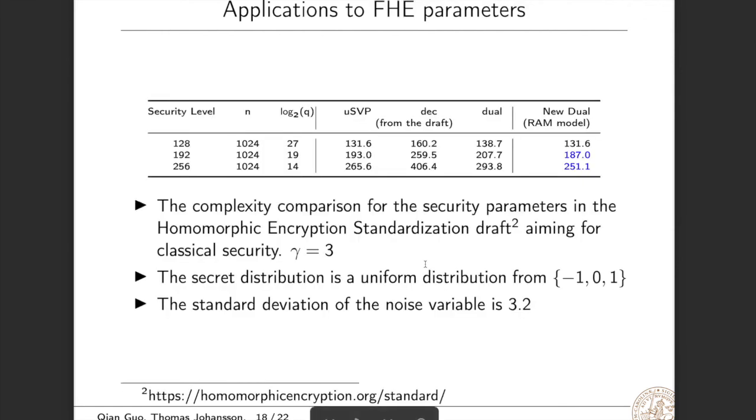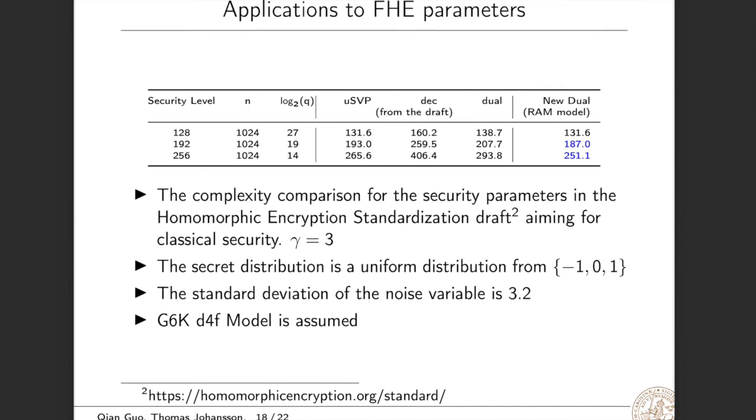We also apply the new algorithm to solving some FHE parameters. This table shows a complexity comparison for the security parameters in the homomorphic encryption standardization draft, aiming for classical security. Here n is 1024 and we choose gamma to be 3. The secret distribution is a uniform distribution from the set {-1, 0, 1}. And the standard deviation of the noise variable is 3.2. We see that we could solve some parameter sets faster than its claimed security level. Here the BDGL D4F model is assumed.